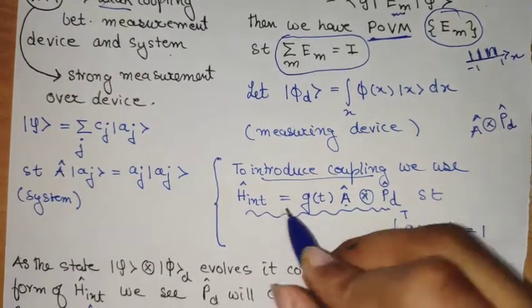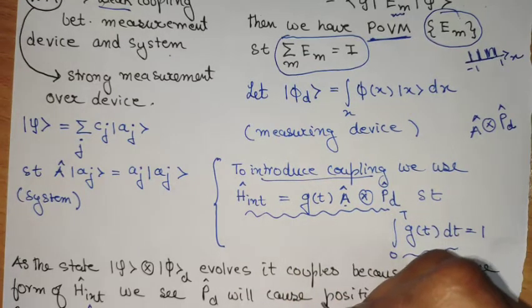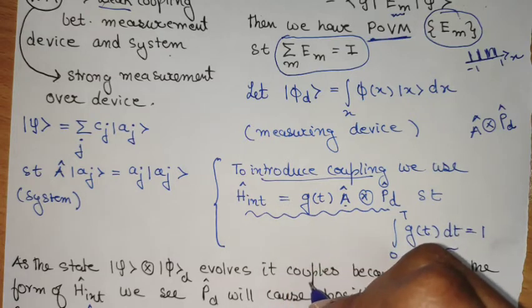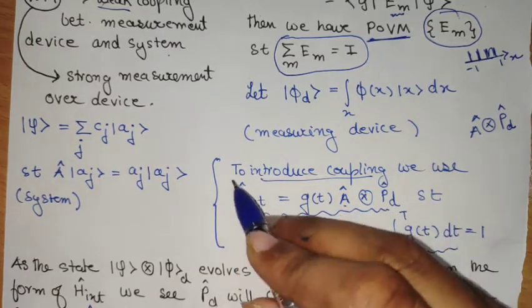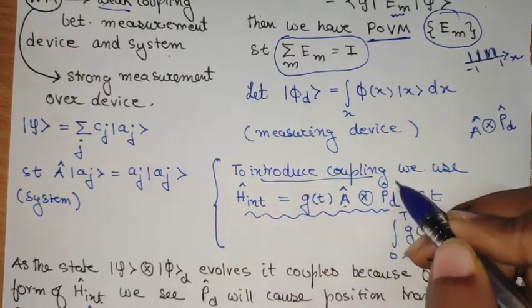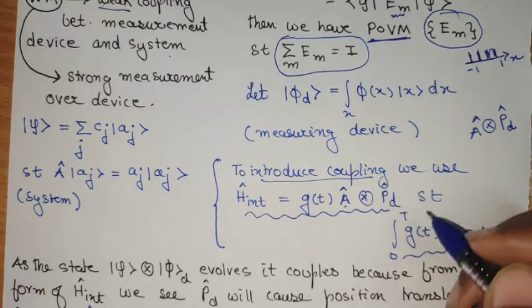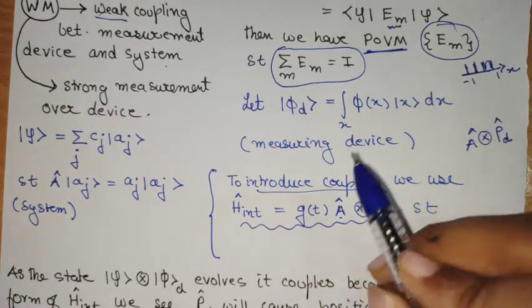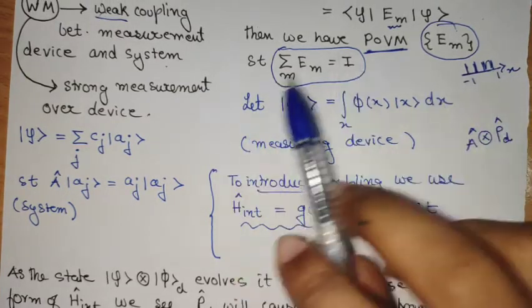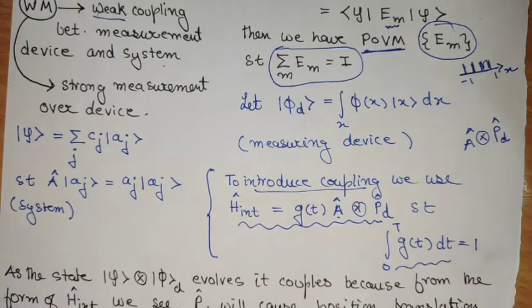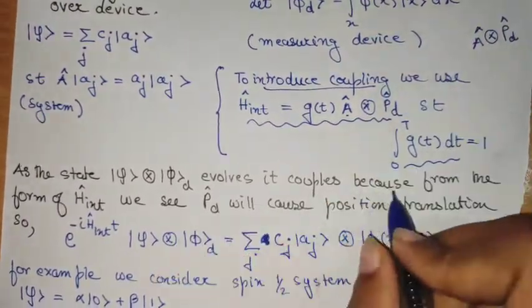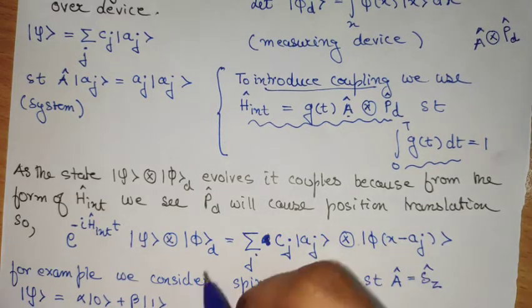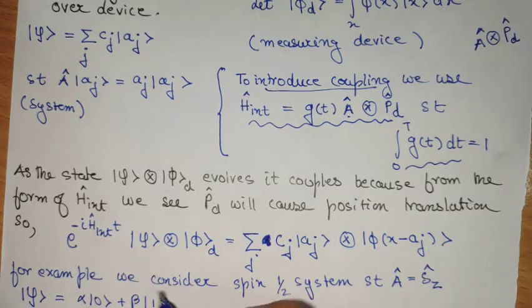This interaction Hamiltonian form gives a clarity: when this form will be exponentiated, or when we perform time evolution, due to the exponentiation of this momentum operator, there will be a translation along the needle position. In that sense, the needle will move from one place to another. As the state evolves, it couples because of the form of the interaction Hamiltonian, and the momentum operator will cause a position translation.